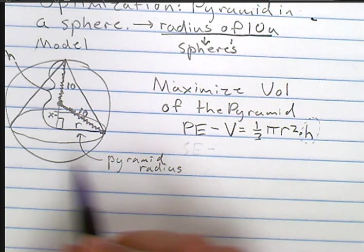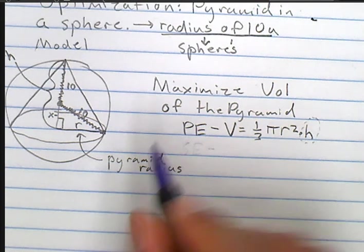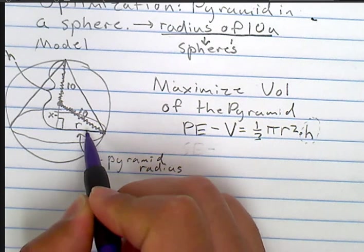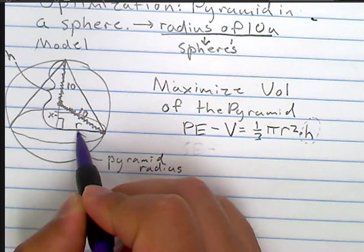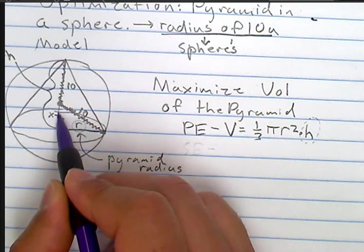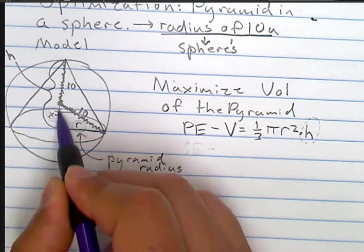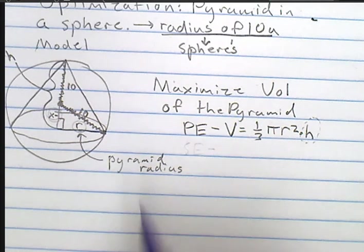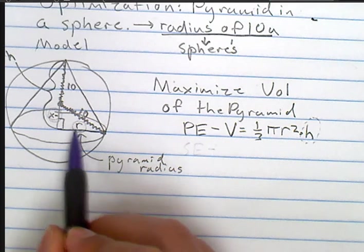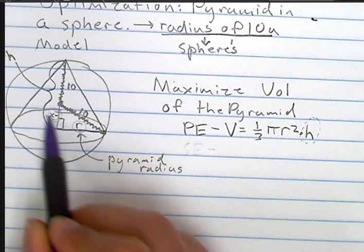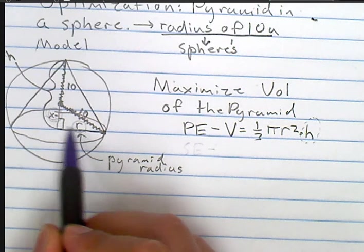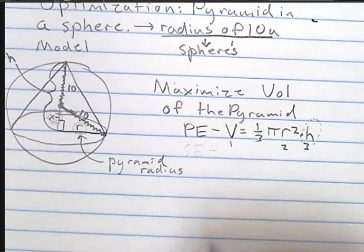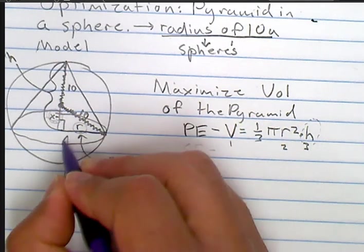Here is our pyramid inside of our sphere. What we want to do is find this x value in terms of the radius. If we can substitute this x value with the radius value or vice versa, we can get rid of this problem with the one, two, three variables.